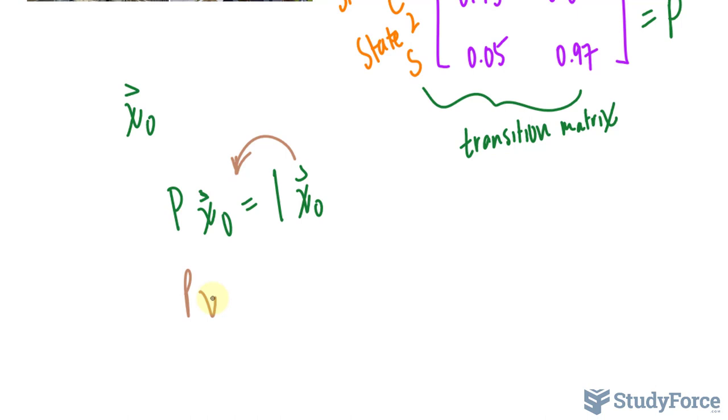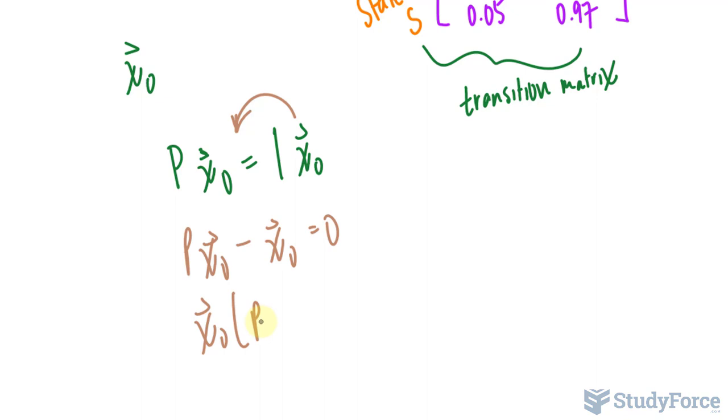If I rearrange this where I bring this over, and I get Px sub-0 minus x sub-0 is equal to 0, and I factor out the steady state vector, I have P minus the eigenvalue of 1 times the identity matrix times the steady state vector is equal to 0.